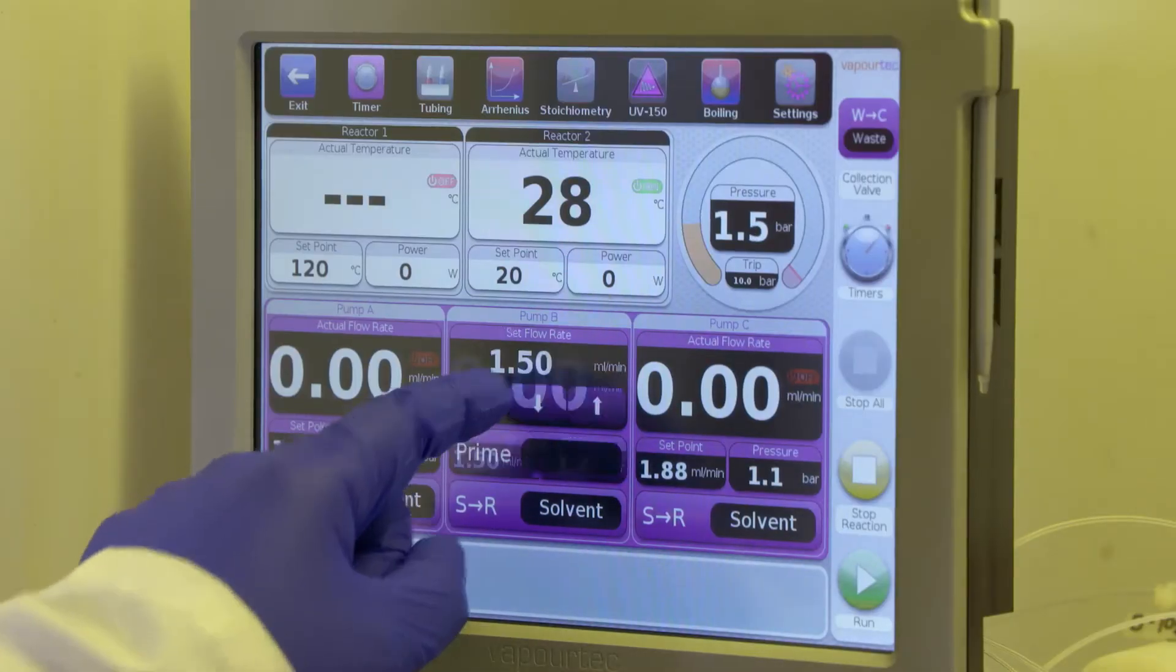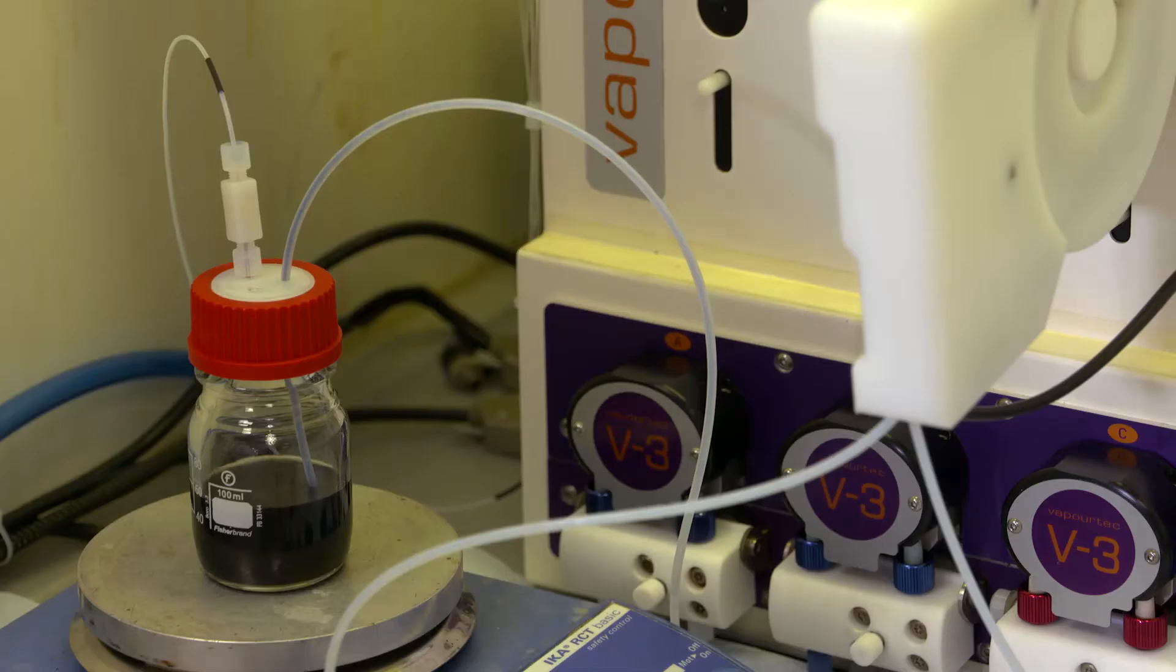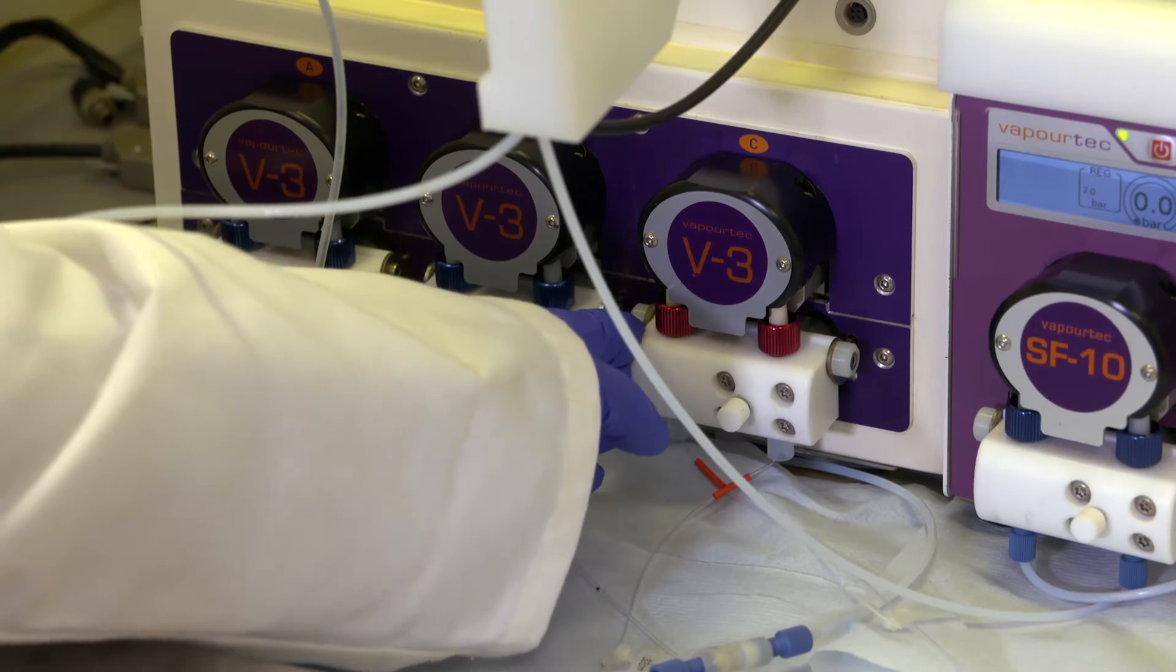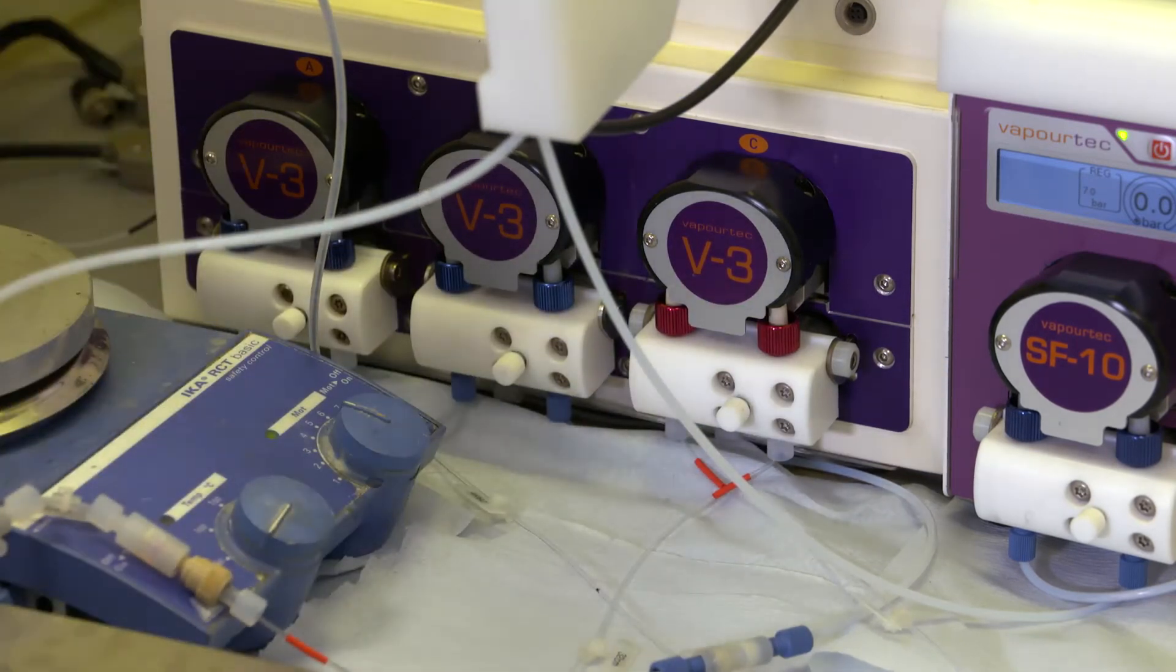Now that the reagents are ready I need to prime the slurry up to the pump. So this E-Series is equipped with special slurry manifolds and I'm using larger bore tubing for all of the flow path that the slurry is going to pass through.